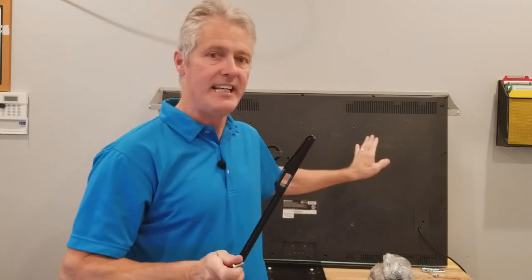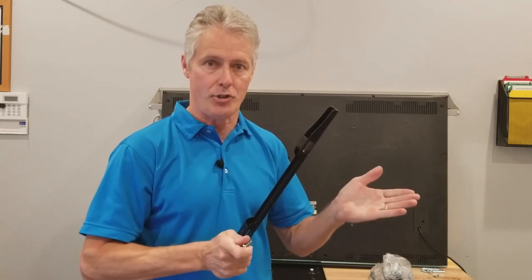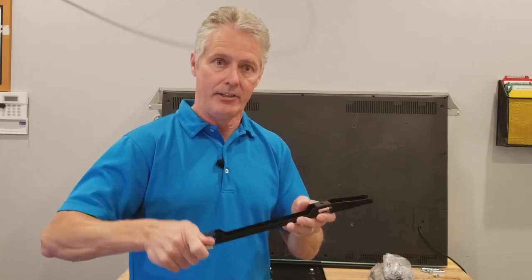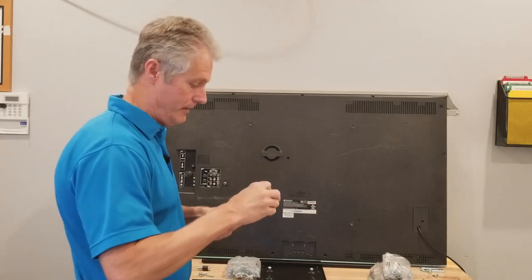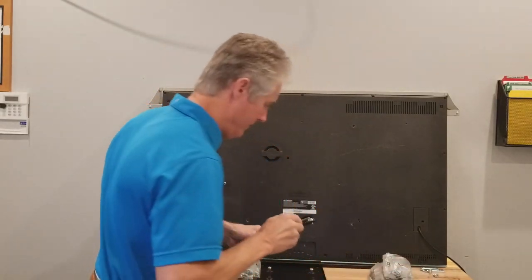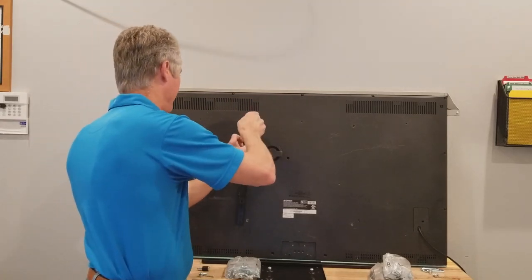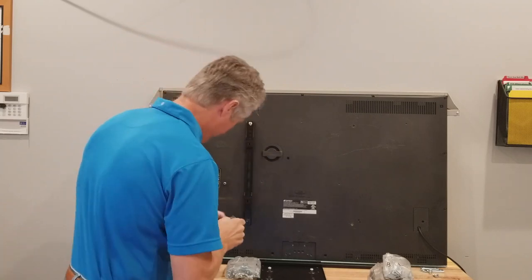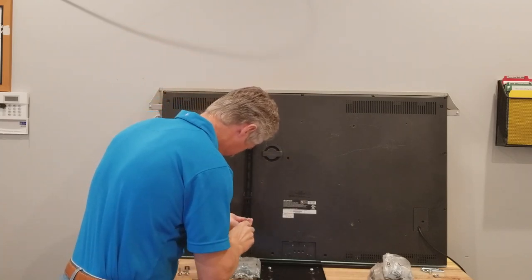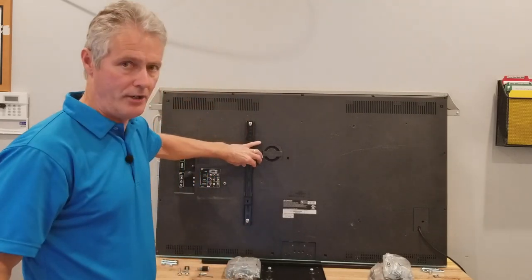I'm going to start out showing you one way of doing it with the TV sitting upright. Again, if you're sitting your TV upright make sure it's not going to fall—you don't want to crack your screen. If you are laying it down, make sure you don't bust the face of it when attaching your hardware. I'll start with one vertical rail. I'm leaving it loose and I'll show you why.